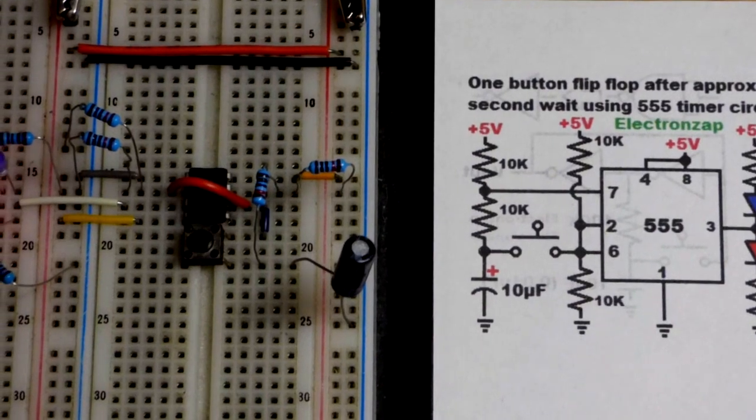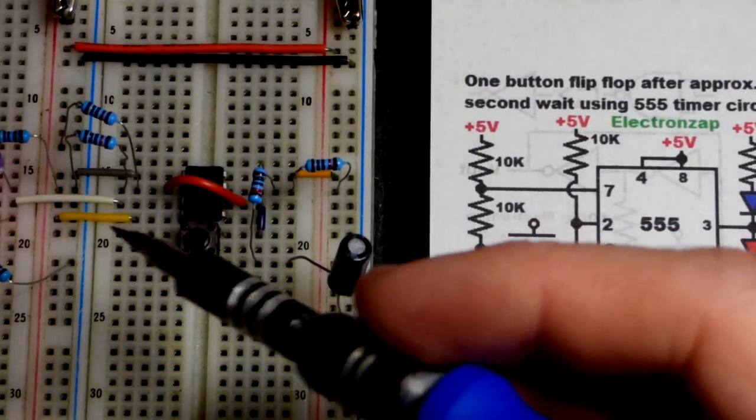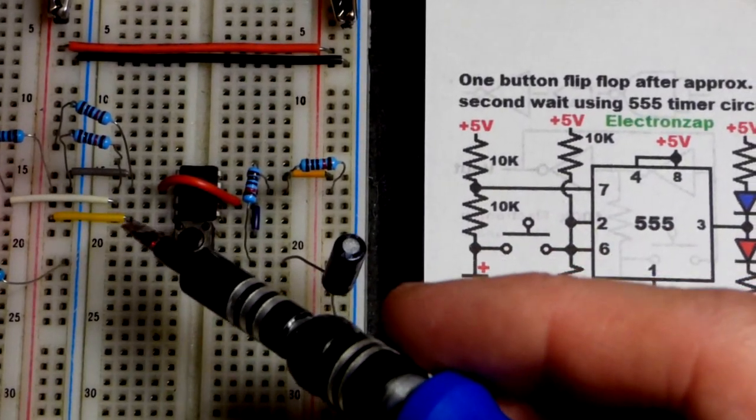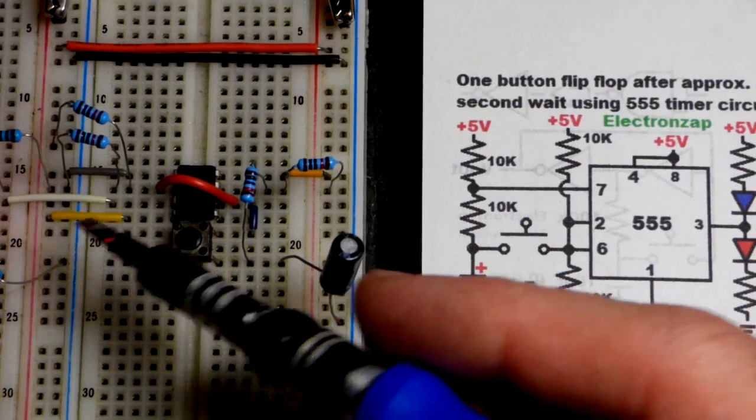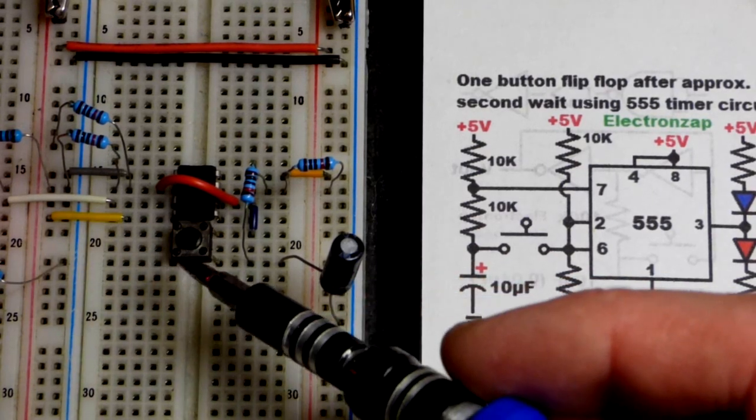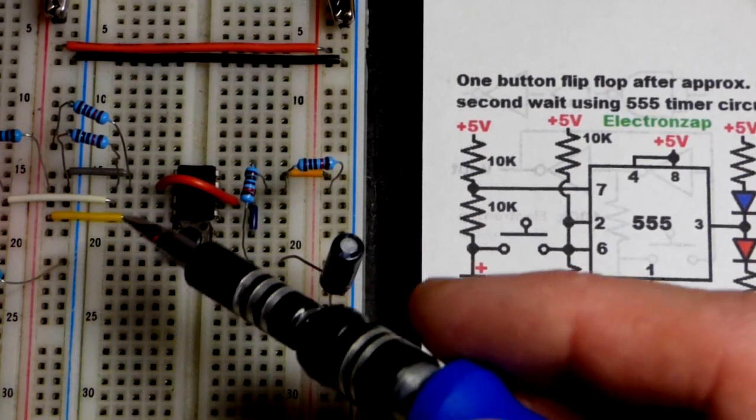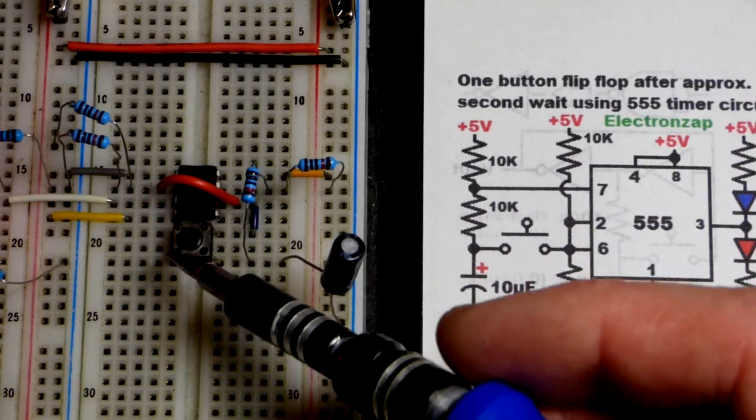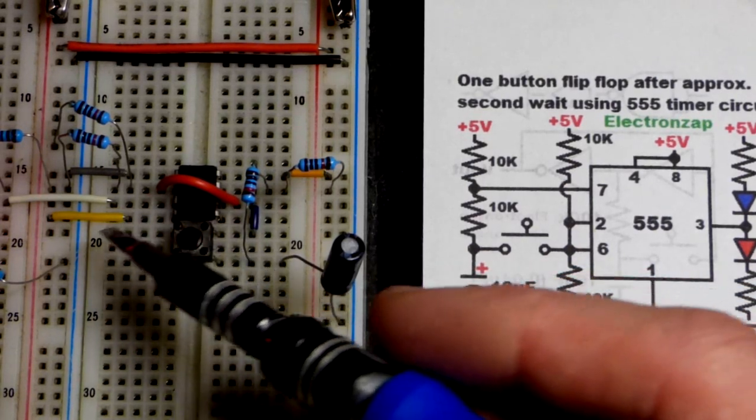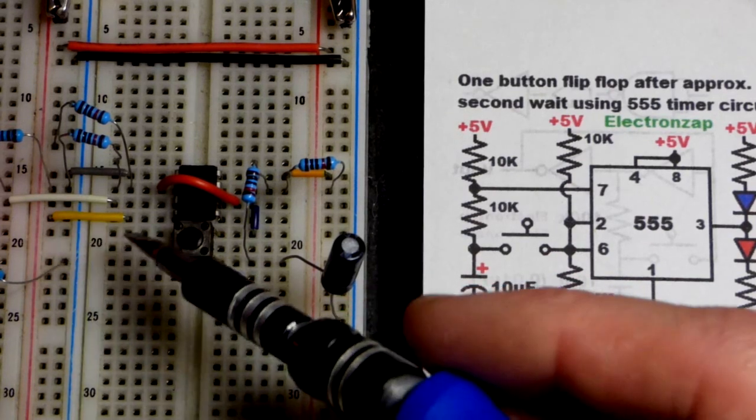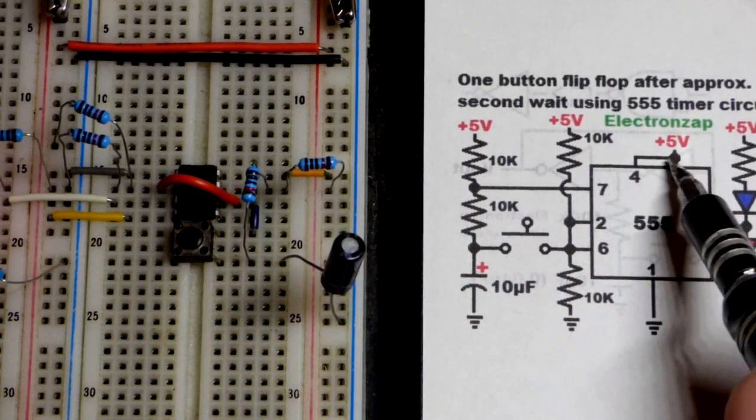Pin four here - so for a flip-flop usually pin four has a switch attached to it, but we don't have that set up in the circuit. We just have one button instead of two. Usually there's a switch to pin two and a switch to pin four. So we don't want pin four to do anything, we put it directly to the positive supply right there.